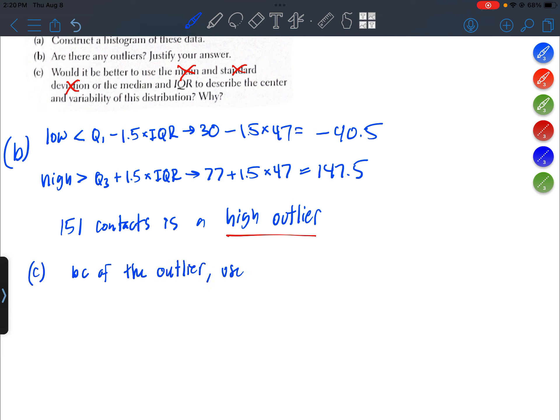So the best thing to do here is because of the outlier we'll use the median and IQR, because those two measures are resistant to outliers. Meaning they're not going to easily change just because there's one or two outliers in the data set.